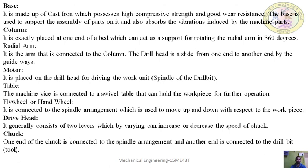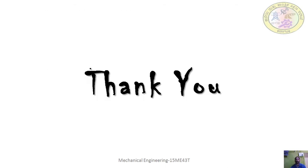The radial drilling machine is called so because it has a radial arm which can be moved along the radial direction to accommodate heavier or larger workpieces. These machines are mainly used in industries because of their ability to handle heavy and large workpieces, making them widely used in the mechanical engineering industry. Thank you for this session. In the next session, we will cover the different operations of the drilling machine. Thank you for watching.